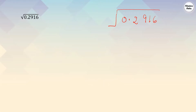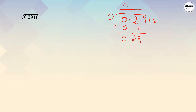Let's take one more example where the whole number part is zero: 0.2916. First step: put a bar on 0 for the whole number part. For the decimal part, start from 2 and make pairs — 29 in one bar and 16 in another. Since it's zero, the square root near 0 is 0, so we write 0. Bring down the next pair 29, and since this is a decimal number, put a decimal in the quotient. You can directly write 0. and start from 29.